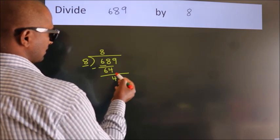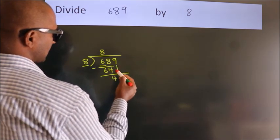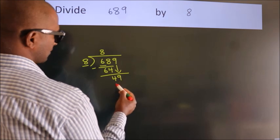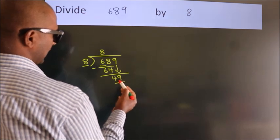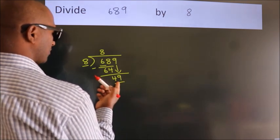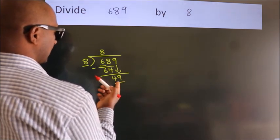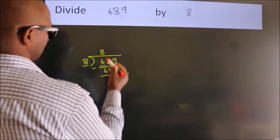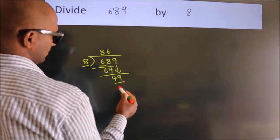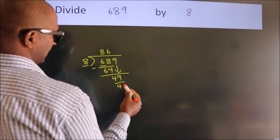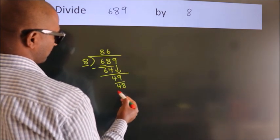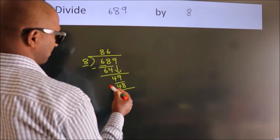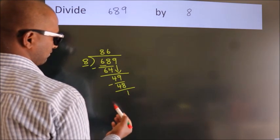After this, bring down the next number. So 9 comes down, making it 49. A number close to 49 in the 8 times table is 8 × 6 = 48. Now we subtract, and we get 1.